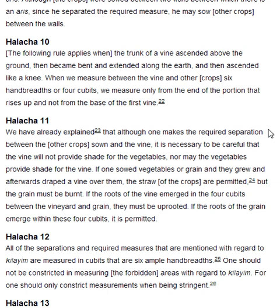Halakha 11. We have already explained that although one makes the required separation between the other crops sown and the vine, it is necessary to be careful that the vine will not provide shade for the vegetables, nor may the vegetables provide shade for the vine. If one sowed vegetables or grain and they grew, and afterwards draped a vine over them, the straw of the crops is permitted but the grain must be burned. If the roots of the vine emerged in the four cubits between the vineyard and grain, they must be uprooted. If the roots of the grain emerge within these four cubits, it is permitted.